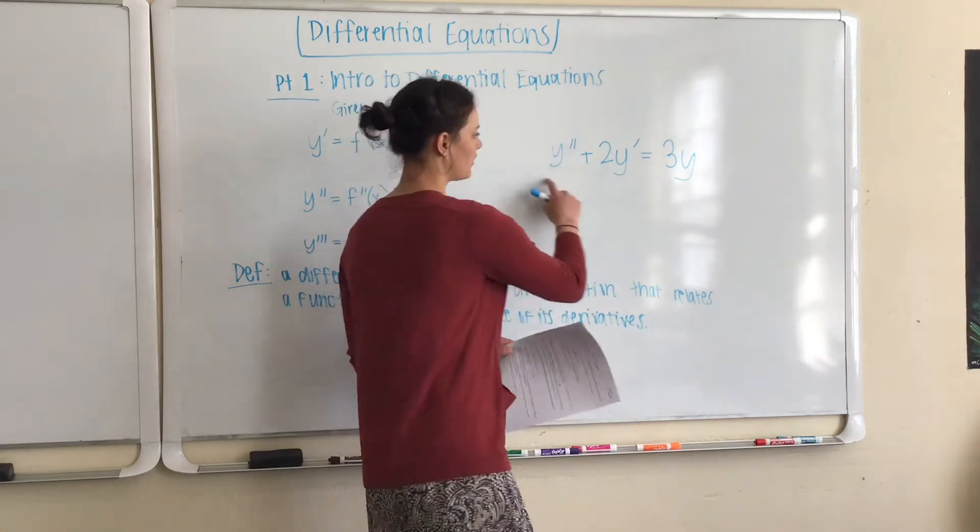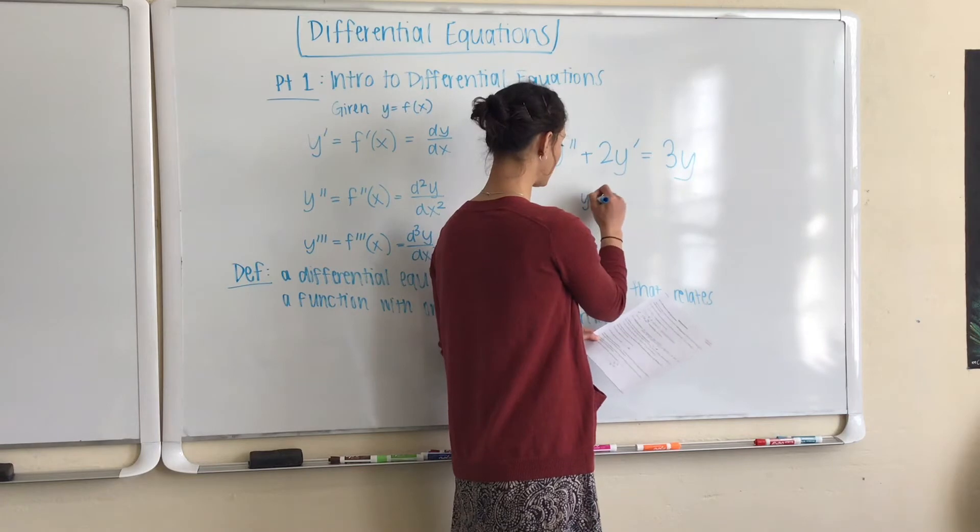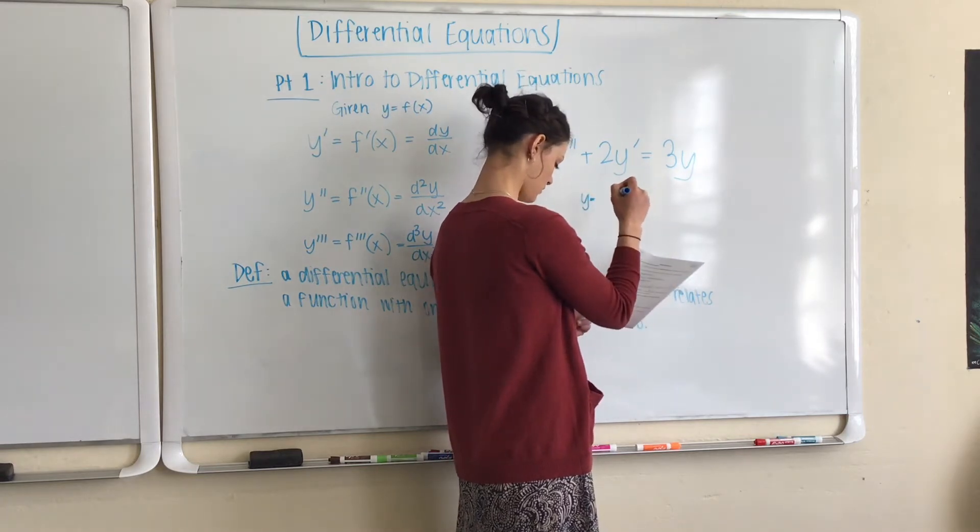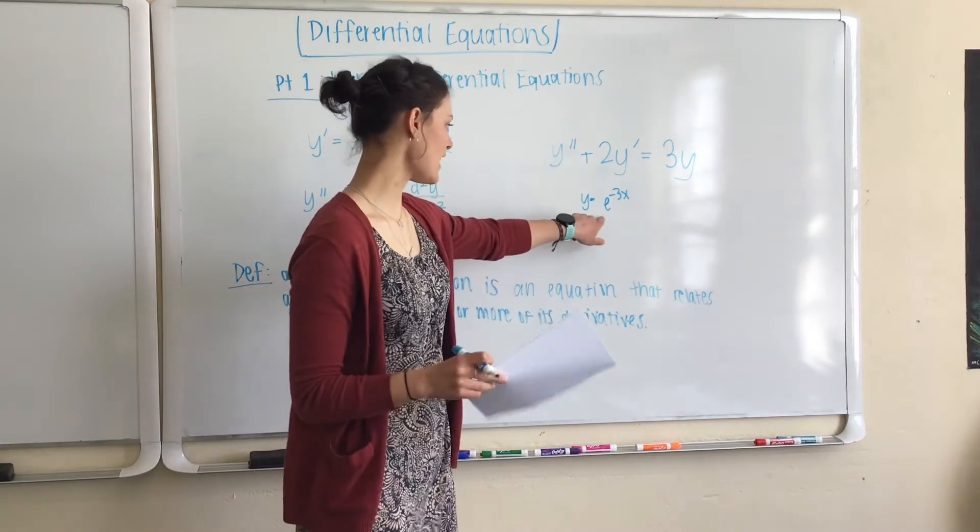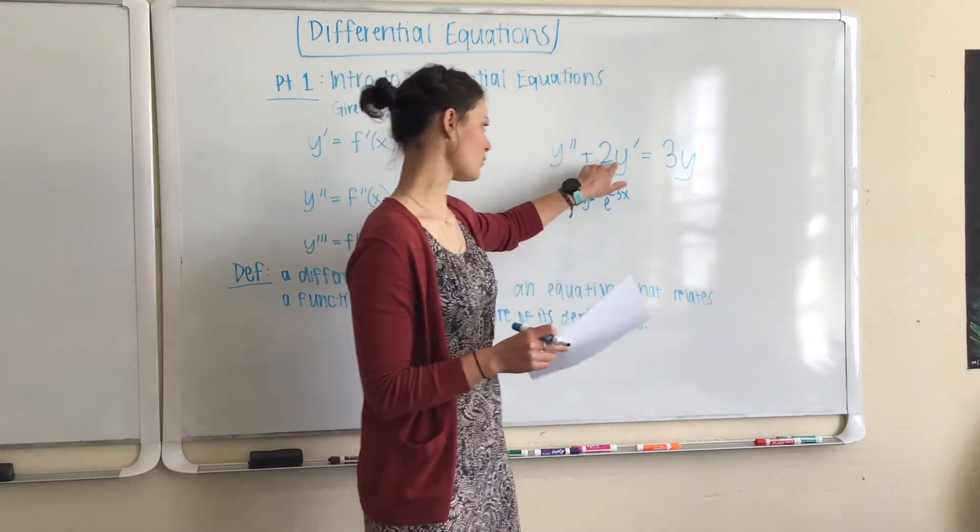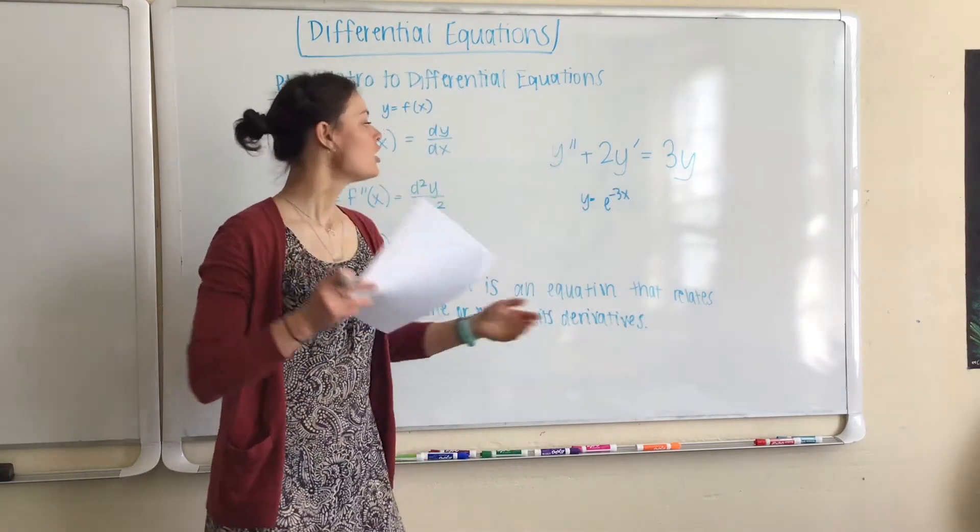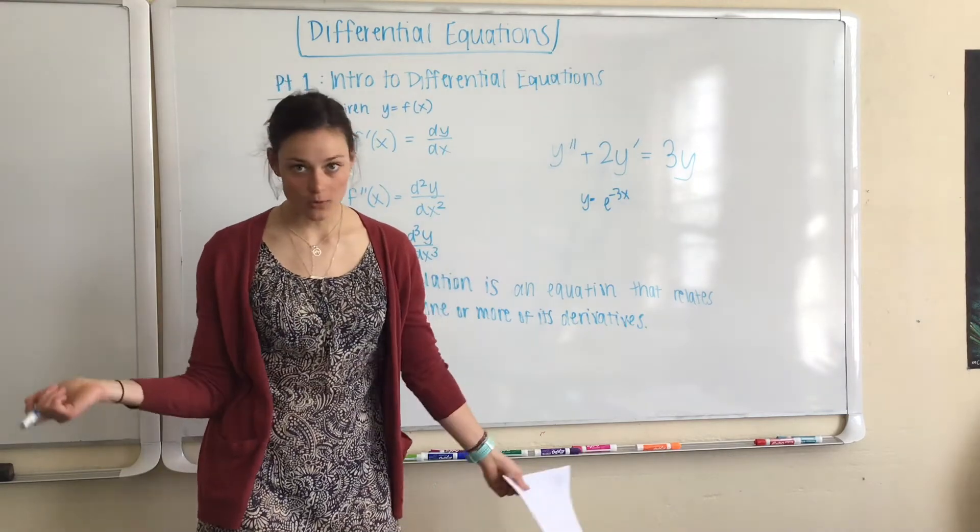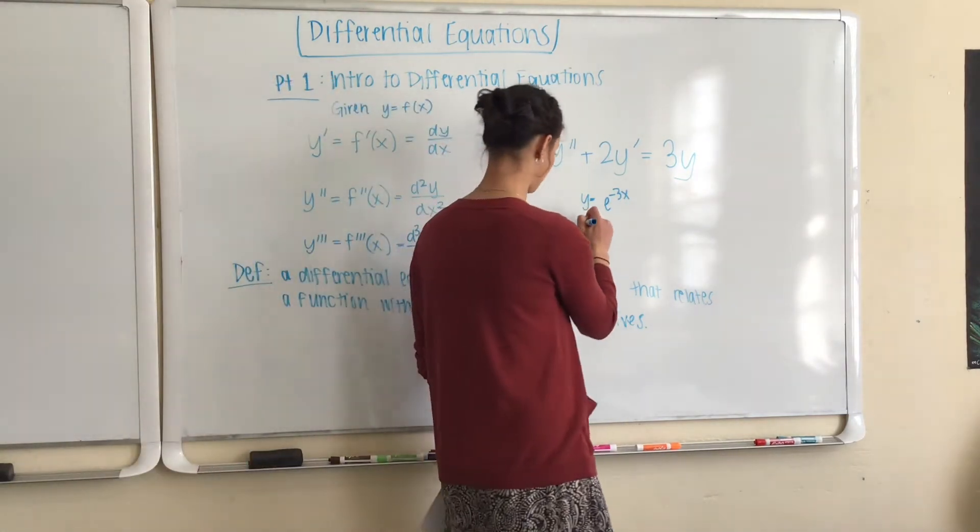But when we look at our equation, I'm telling you that the solution is y = e^(-3x). We can't just plug this in because this isn't y, right? This is y''. This isn't y. This is y'. This we can plug in right there, but then we still have these two things floating up there. So what we're going to need to do is find the first and second derivatives.